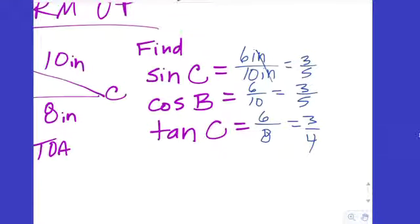For any function we have an independent variable and a dependent variable. As I mentioned yesterday, the angles themselves are your independent variable — your inputs, your x values. And the ratios depend upon the angle, so the ratios are your dependent variables, your y values.